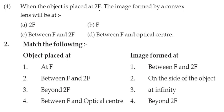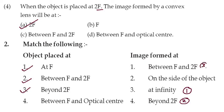Now matching — when object is placed at 2F in a convex lens, image forms at 2F. Match the object position with image position. Object at F — image at infinity. Object between F and 2F — image beyond 2F. Object beyond 2F — image between F and 2F. Object between F and optical center — image on the same side as the object.